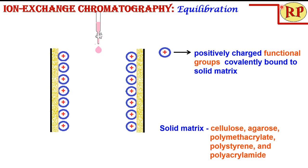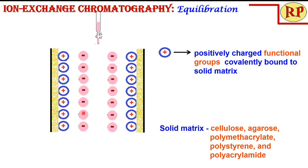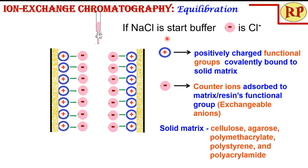The first process is equilibration. In this process, the exchangeable ions get attached to the fixed ions. For an anion exchanger, the fixed ions are cations, so I pass a NaCl solution. The Cl⁻ ions are attracted to the positive fixed ions and become the exchangeable counter ions. This is the equilibration process, and the salt concentration of the start buffer should be low.